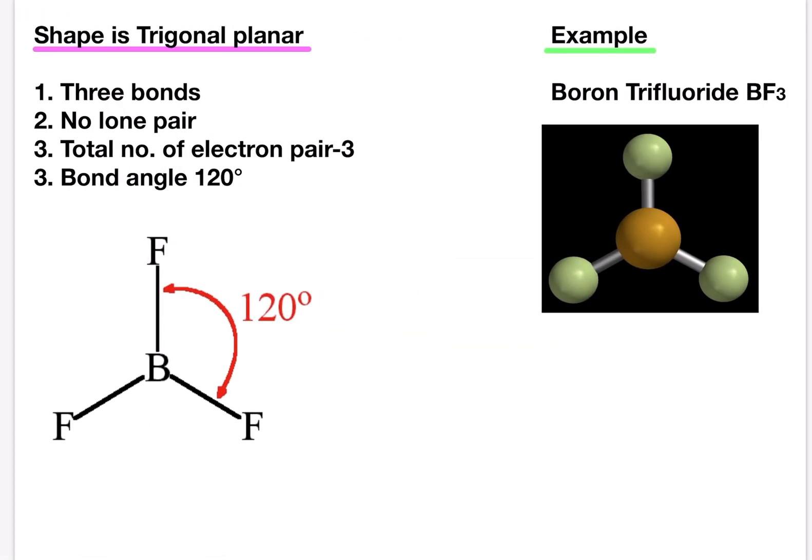Shape is trigonal planar. Example is boron trifluoride. Boron trifluoride is an electron deficient molecule. It has only six electrons in its outer shell. The three bonding pairs of electrons repel each other equally. You'll see boron is in the center and there are three bonding fluorine elements. So they repel each other equally. The boron and fluorine bond angles are 120 degrees. We describe the shape of the molecule as trigonal planar.